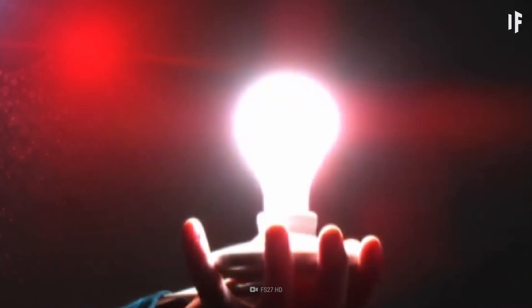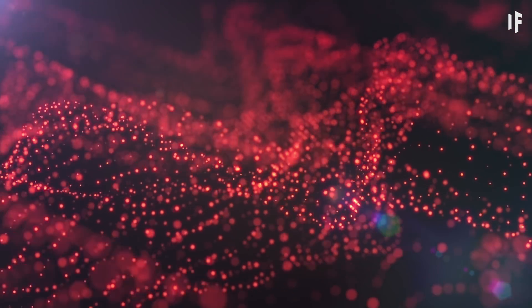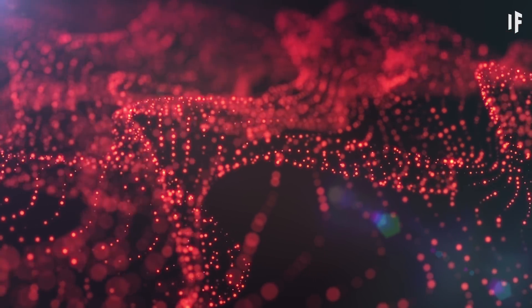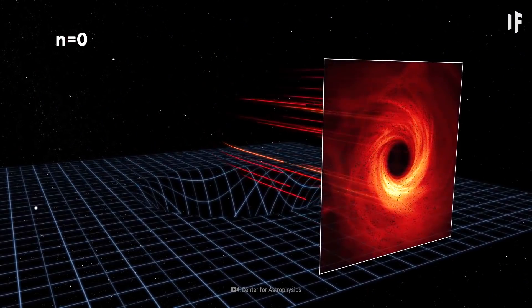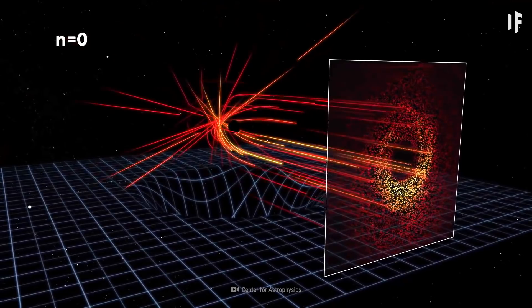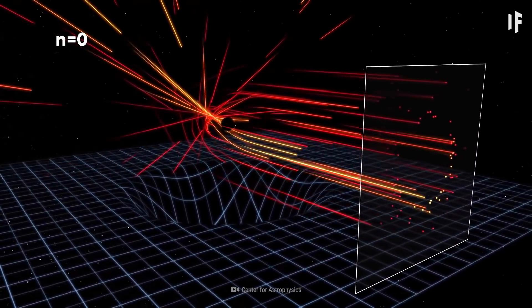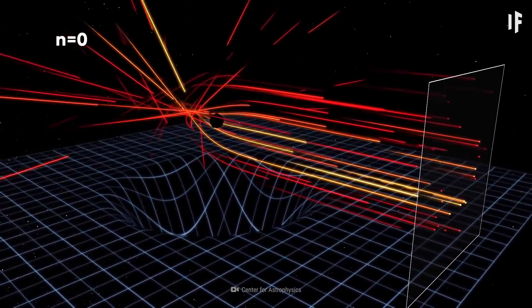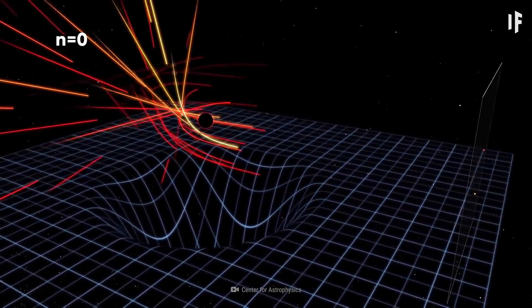Photons can come closer to the black hole than ordinary matter because they're massless. And the crazy thing is that the photons we see in this ring don't just come from the sides of the black hole. They also come from behind it.